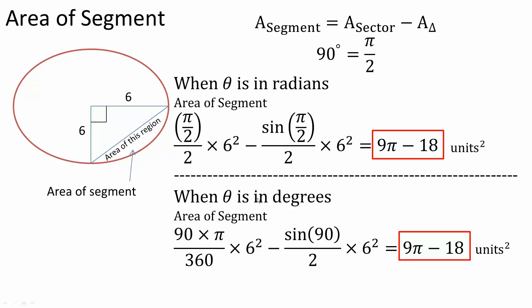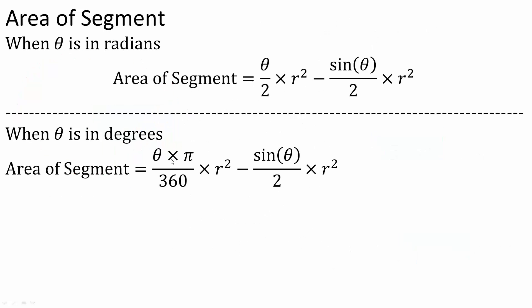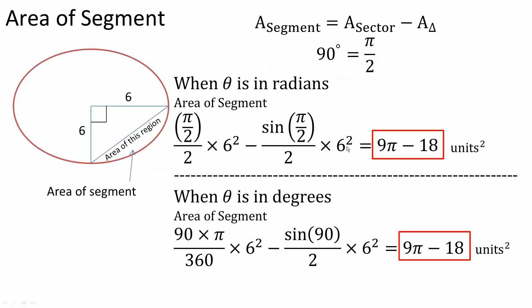Now we'll do it in terms of degrees. So we go 90 degrees, so 90 times pi, divided by 360, times r squared, which is 6 squared, minus sine 90, divided by 2, times 6 squared. So this is what we did right here. Use a calculator, you would get 9 pi minus 18.